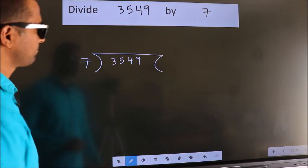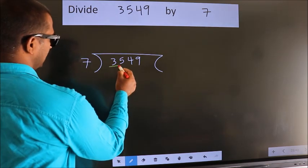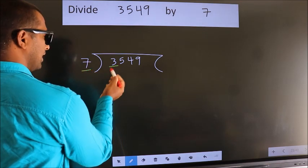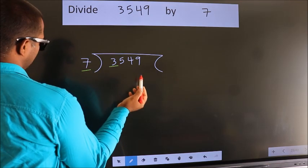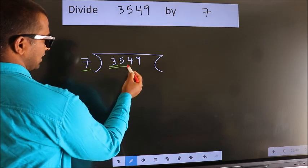Next, here we have 3. Here 7. 3 smaller than 7. So we should take 2 numbers, 35.